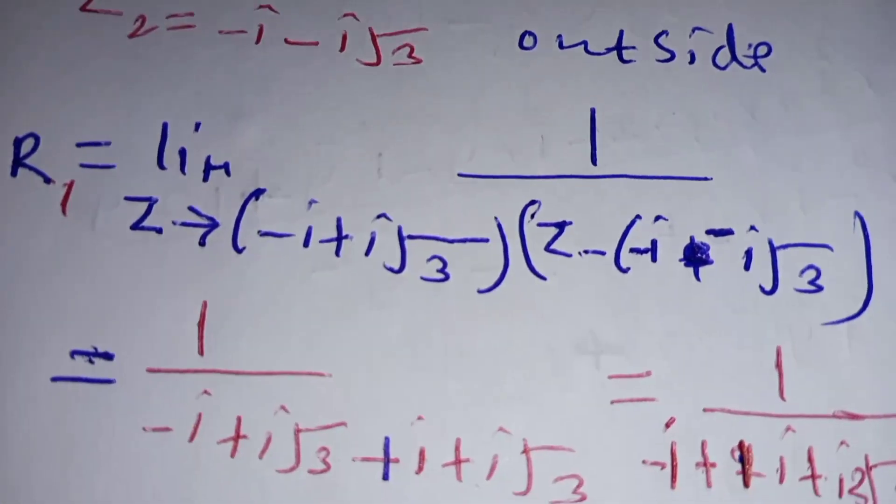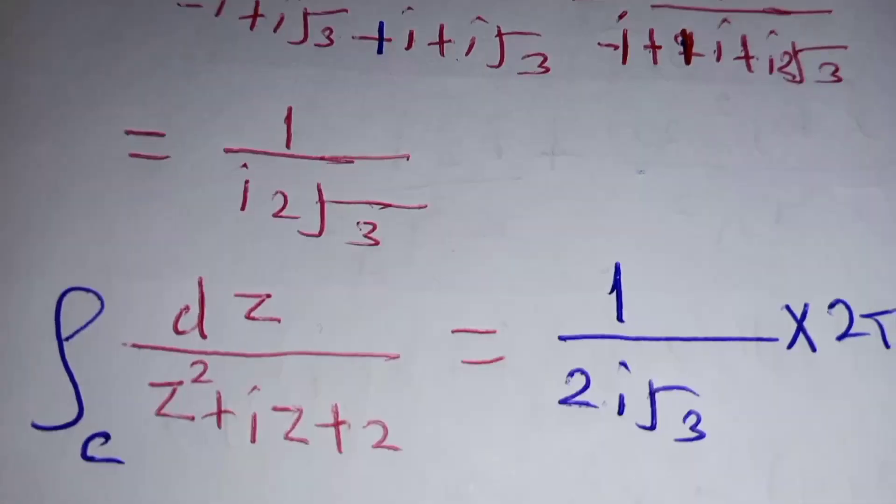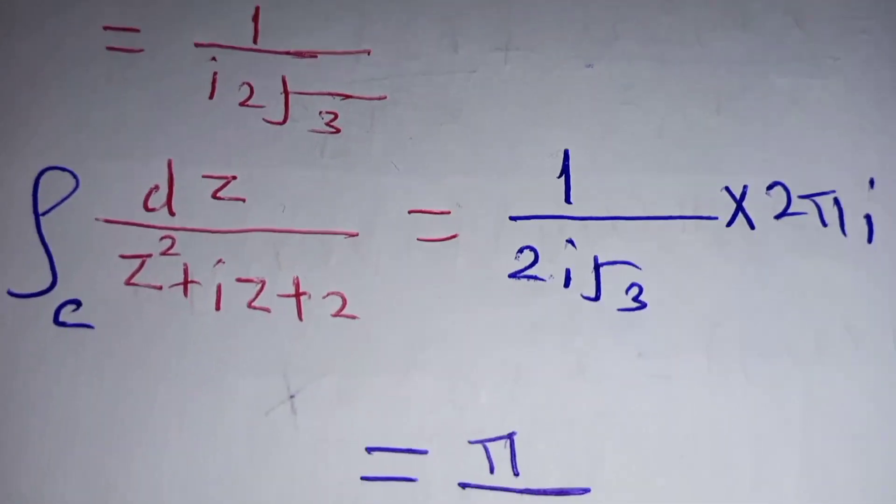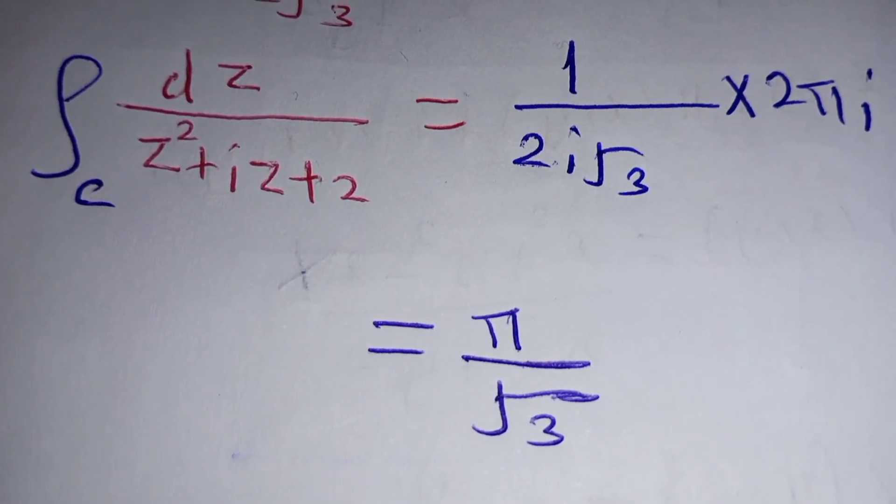Which is 1 over 2i root 3 times 2 pi i. So 2i will cancel and we are going to be left with pi over root 3. So that is our answer for this integral: pi divided by root 3.